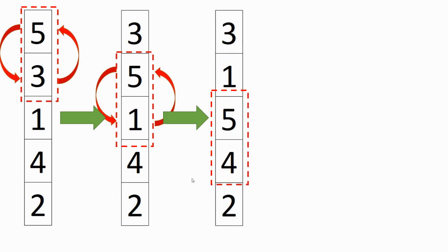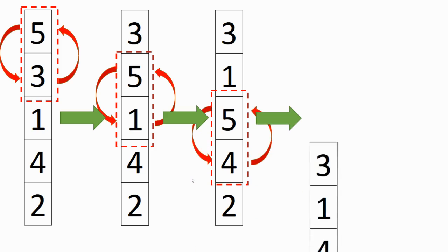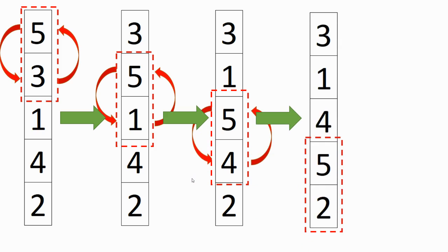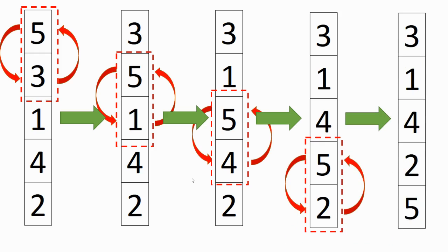We will compare the next set. And if the first number of this set is larger, we will swap them. Then we will compare the last set and swap them. Then we will receive the last numbers, and we see that the five is going to the last position. It is fixed there. Then we continue and start from the beginning.